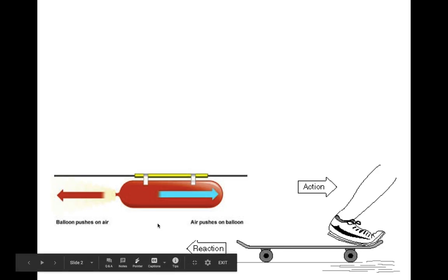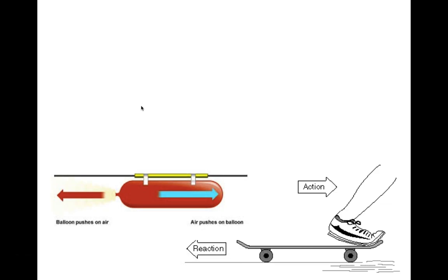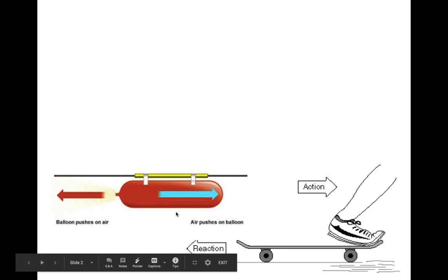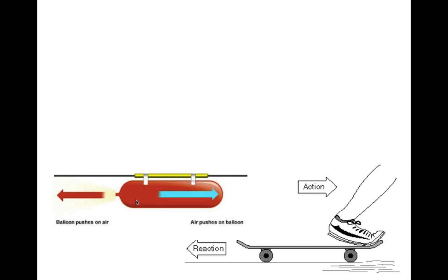This is very similar to many different actions that we've seen. One example is if you have a balloon filled with air, taped to a straw, and that straw is running on a string — basically a balloon roller coaster. What we see is that the balloon pushes the air out backwards; that would be the action. The reaction is the air pushes on the balloon. For every action there is an equal and opposite reaction: the balloon pushes the air, and the air pushes the balloon.